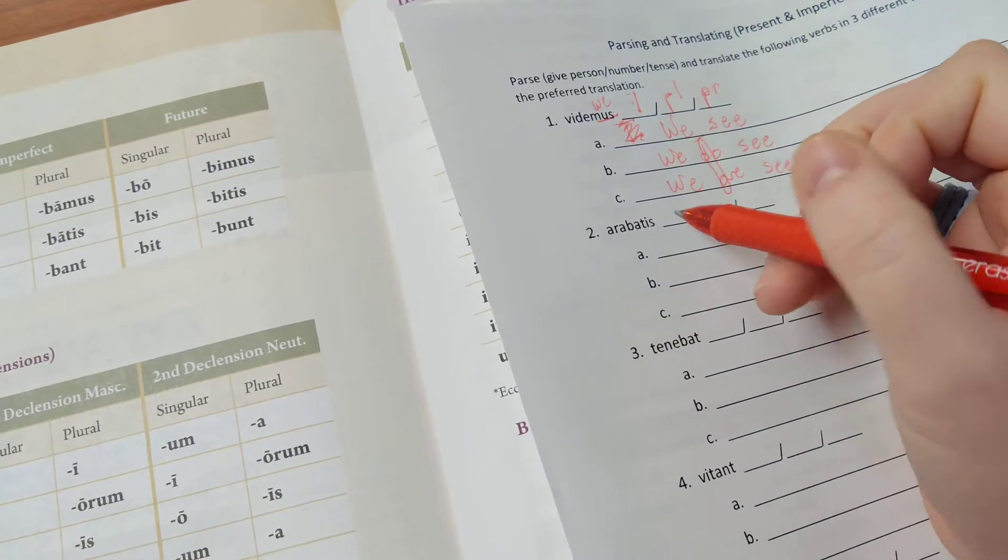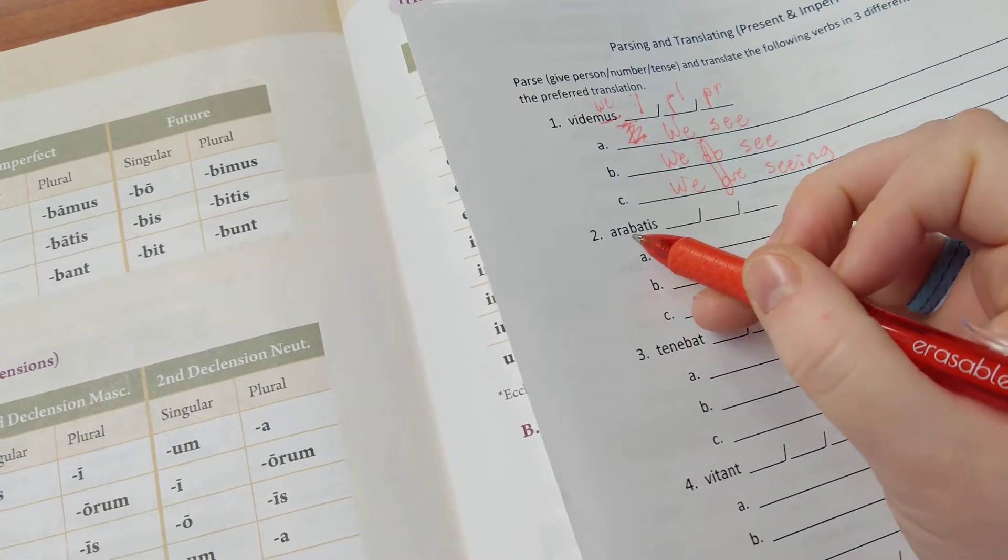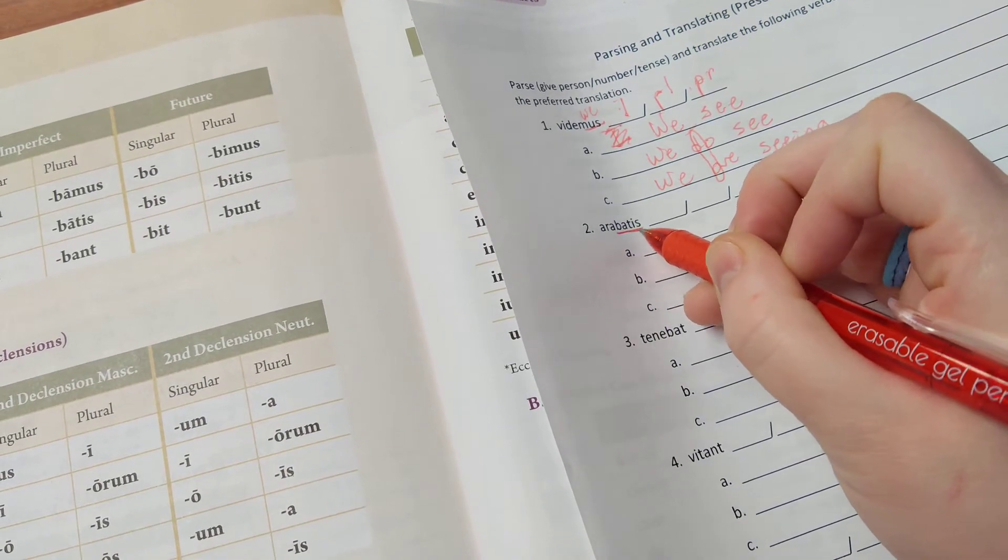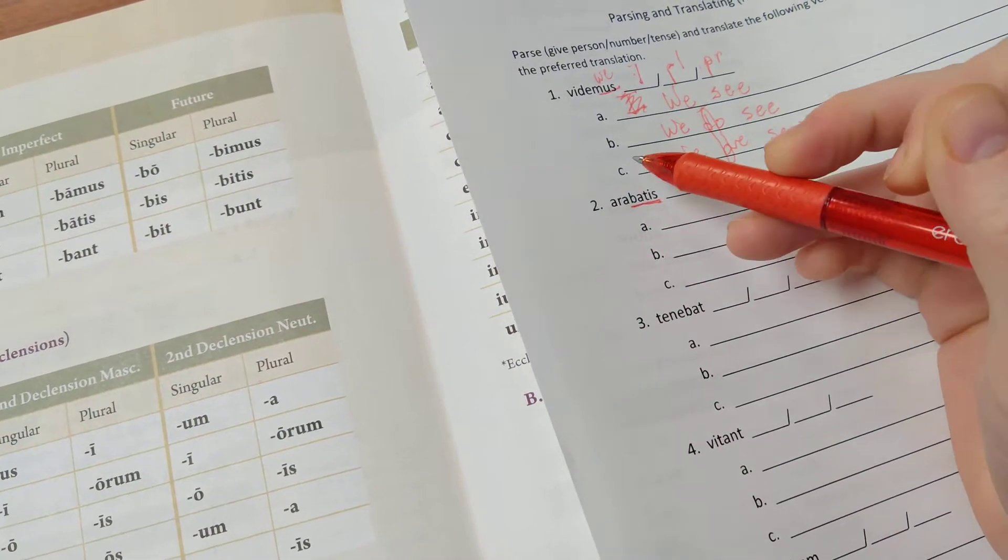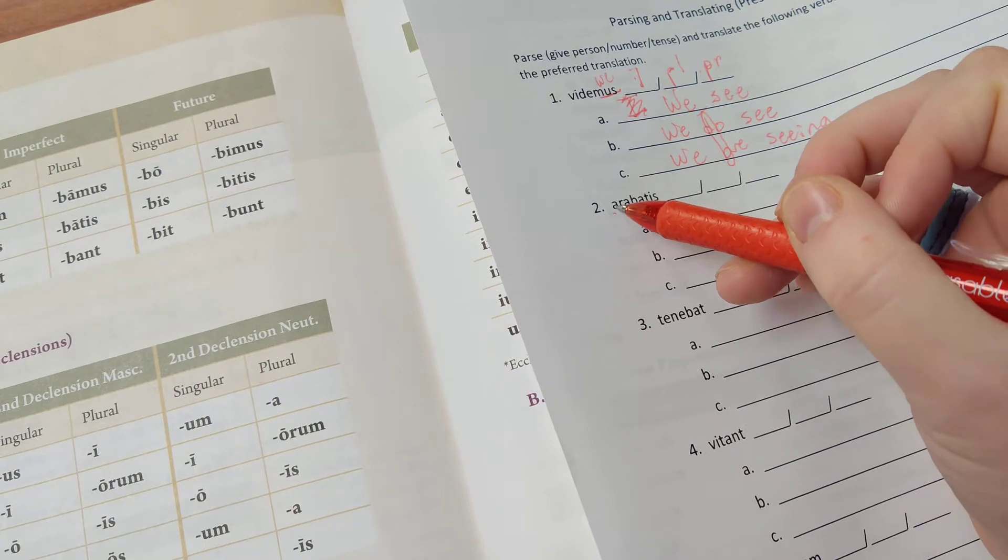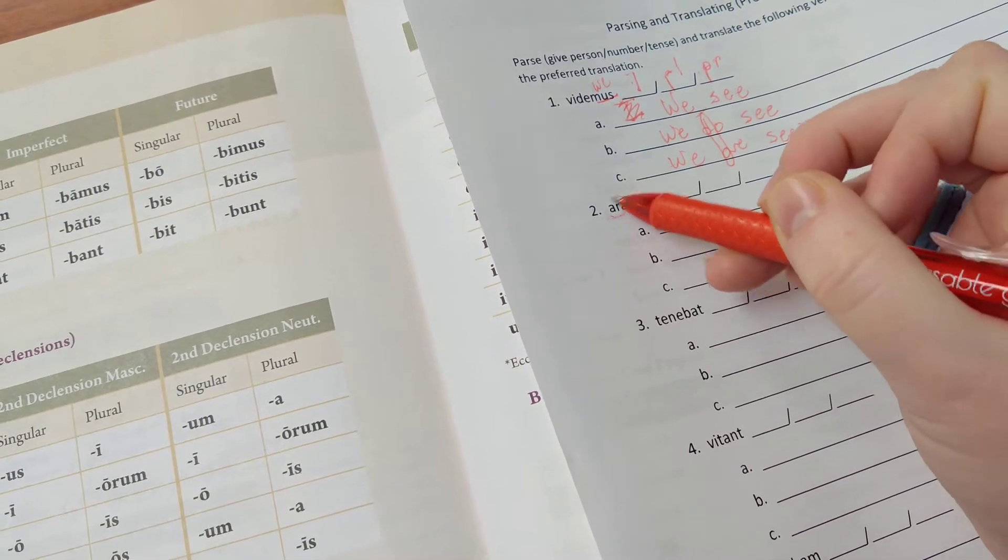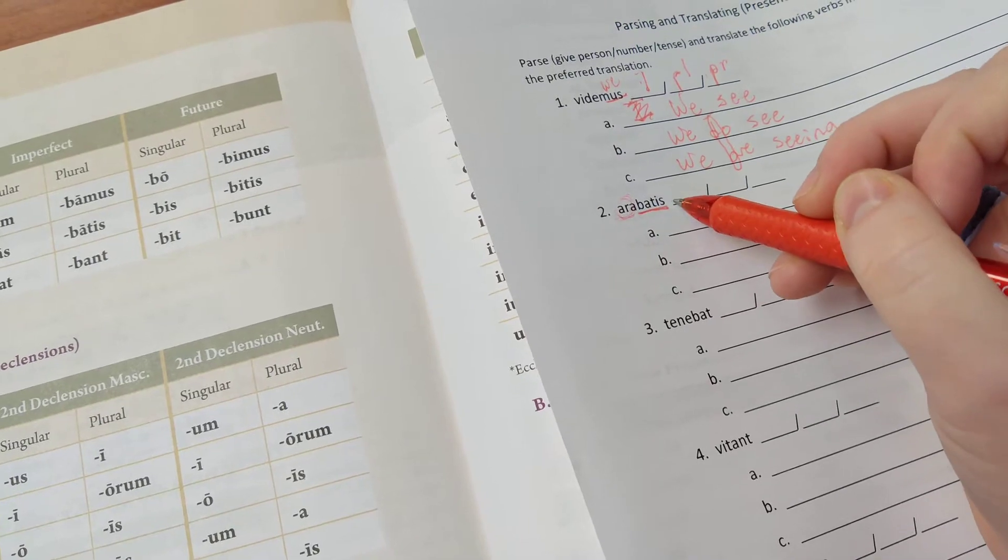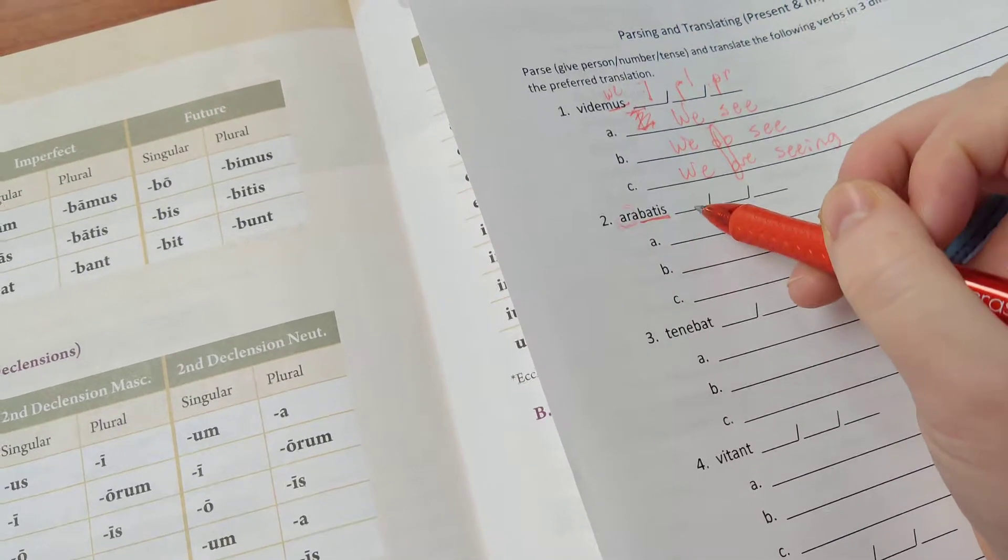If we go to arabatis, our ending on arabatis is -batis. Aro, if you look it up in your glossary, means to plow. So arabatis, we need to parse it.